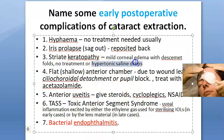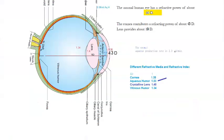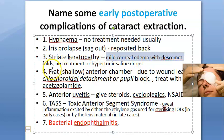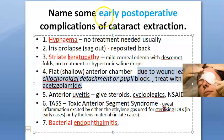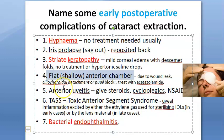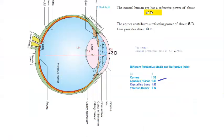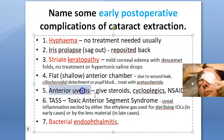Striate keratopathy is mild corneal edema with Descemet's folds — no treatment is required, or they give hypertonic saline drops. A flat or shallow anterior chamber can happen due to wound leak, ciliochoroidal detachment, or pupillary block, and is treated with acetazolamide. Anterior uveitis — inflammation of the iris and part of the ciliary body — is treated with standard treatment: steroids, cycloplegics, and NSAIDs.